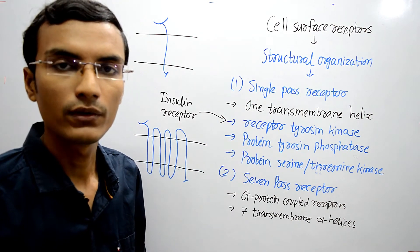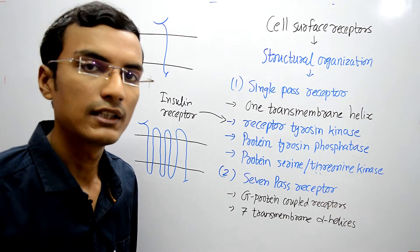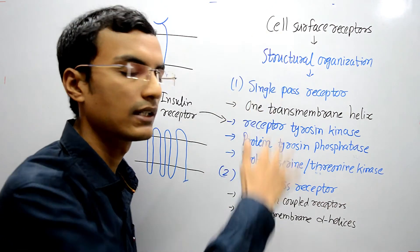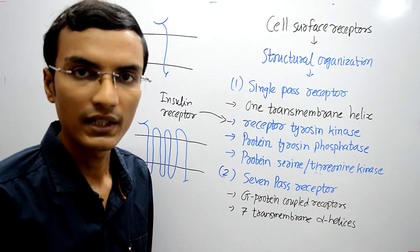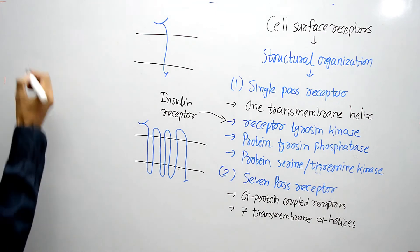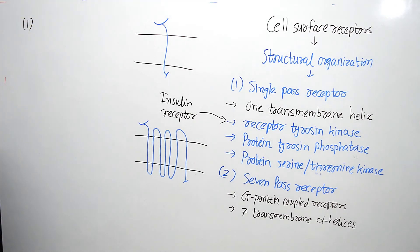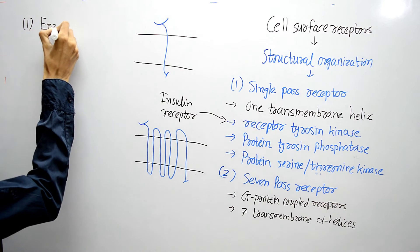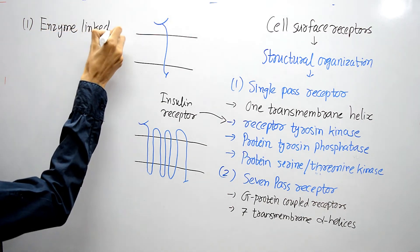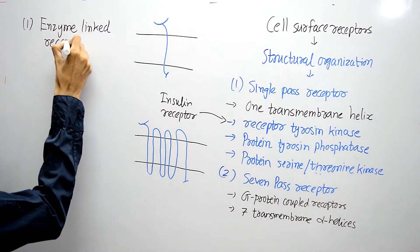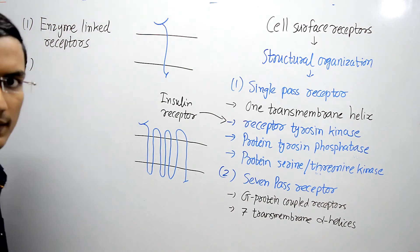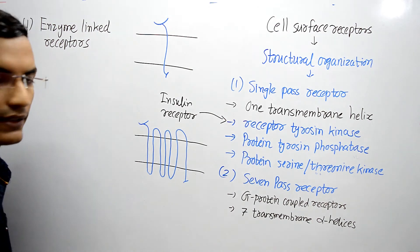On the basis of the molecules which are linked to the receptors, cell surface receptors are classified into 3 types. The first type is enzyme-linked receptors.